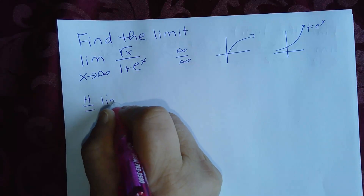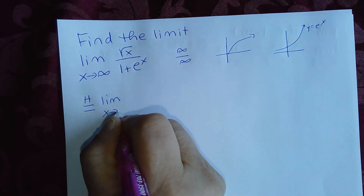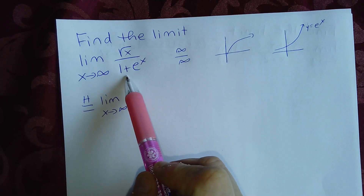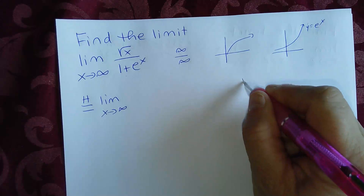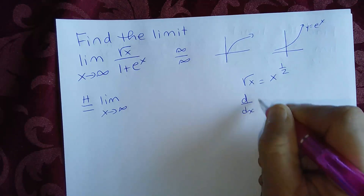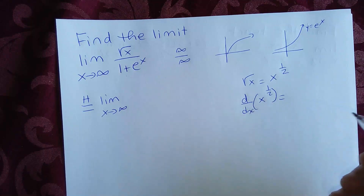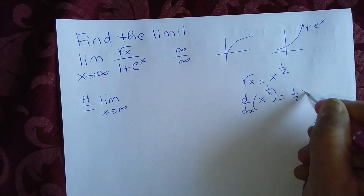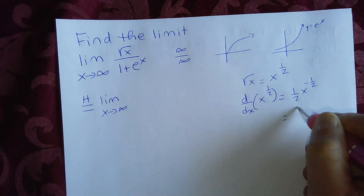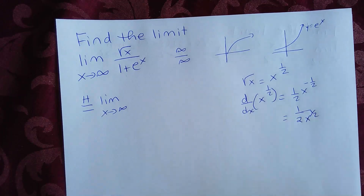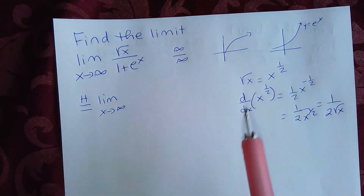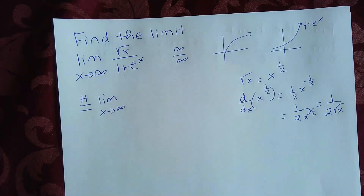So let's find the limit as x approaches infinity by taking the derivative of the numerator divided by the derivative of the denominator. The derivative of square root of x — since square root of x is x to the one-half — is one-half times x to the negative one-half, which is the same as one over two square root of x.